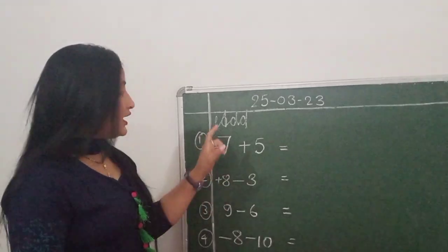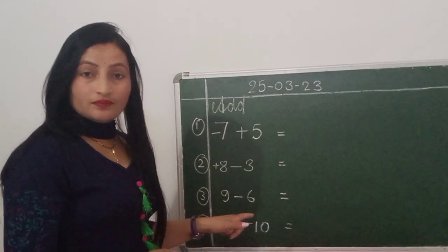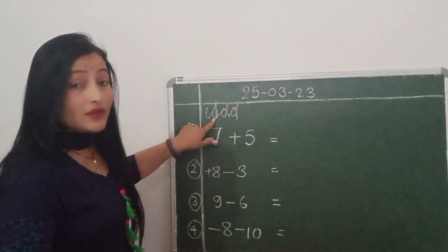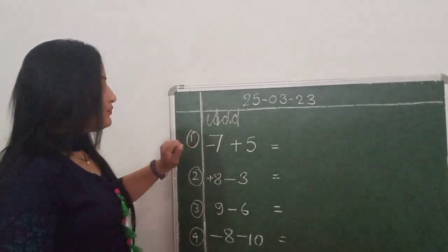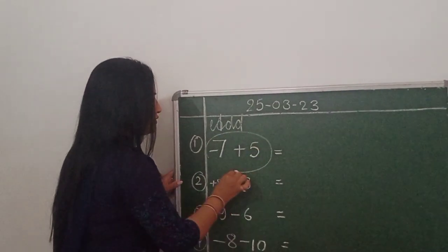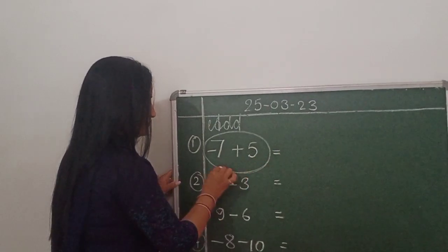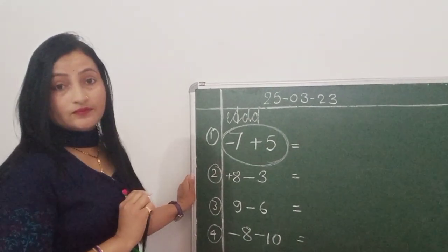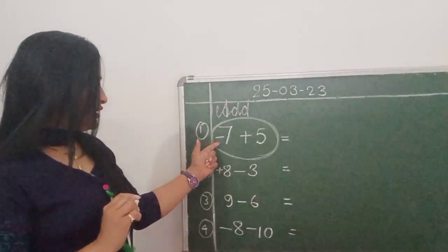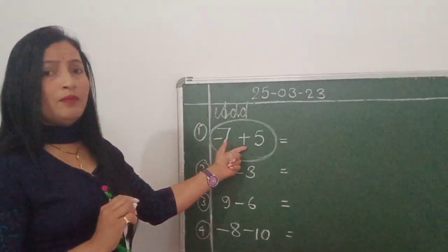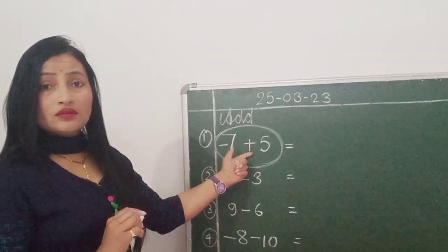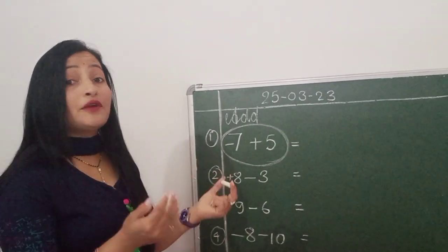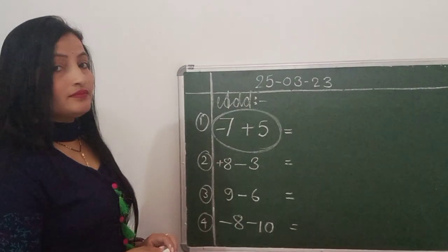So I have written four questions on the board. What do we have to do? Add करना है. Now see, I am talking about the first question. First you have to see their signs. Here minus and plus — there is no same sign. So we don't add, we subtract it.